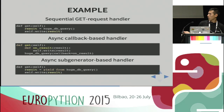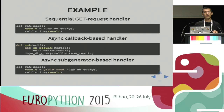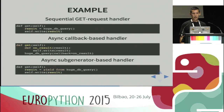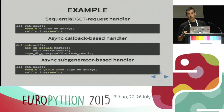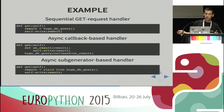We can make it even better with a sub-generator-based handler. We put 'yield from' just before the huge database query. What does yield from do here? The database query should not block — it should return a future, a magic object that is a promise the real result will come later. We yield this future back to our IO loop, which switches to other tasks. When the result is ready, it pushes it back as if yield from was never there — saved to result and written to the client.